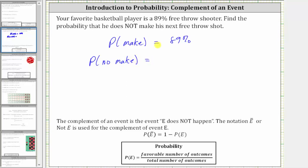must be equal to 100% minus the probability he will make the next free throw, which is equal to 89%. 100% minus 89% is equal to 11%.